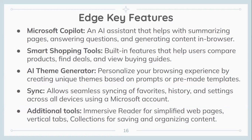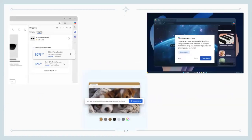Edge key features: Microsoft Copilot is an AI assistant that helps with summarizing pages, answering questions, and generating content in-browser. Smart shopping tools are built-in features that help users compare products, find deals, and access buying guides. The AI theme generator lets you personalize your browsing experience by creating unique themes based on prompts or pre-made templates. Sync allows seamless syncing of favorites, history, and settings across all devices using a Microsoft account. Additional tools include immersive reader for simplified web pages, vertical tabs, and collections for saving and organizing content. Screenshots show Copilot on the top right, deals on the top left, and themes on the bottom.